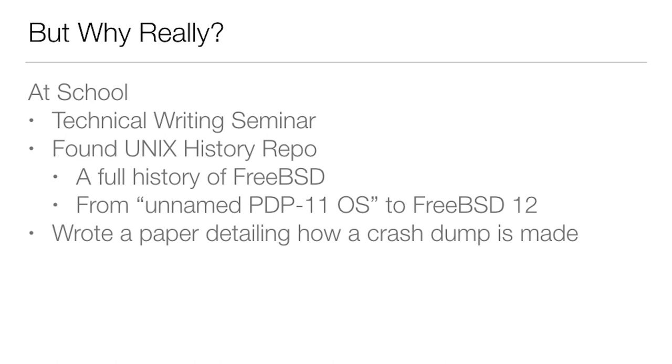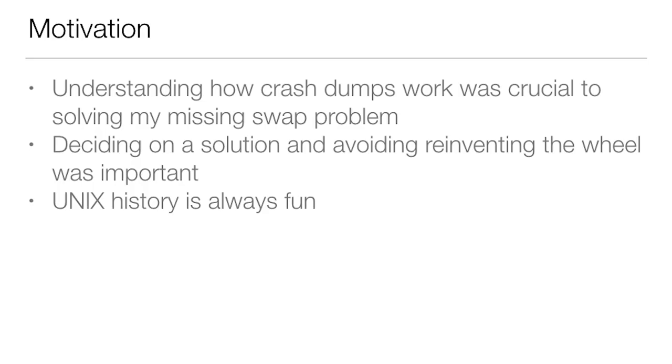There's a second layer of why. Before I graduated, I was in a technical writing seminar and needed a paper of a certain length. Around the same time, I found the Unix history repo — a Git repo that merges the history of FreeBSD backwards all the way into research Unix through 386BSD and all the different versions. I wrote a paper detailing how a crash dump was made, and then expanded it into a history of how crash dumps evolved. Understanding crash dumps was crucial to solving my missing swap partition problem, and Unix history is always fun.